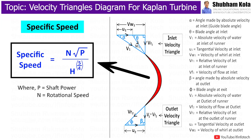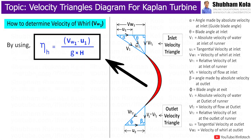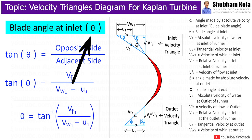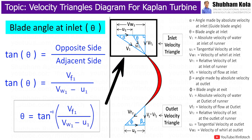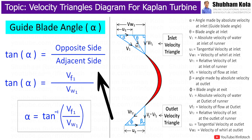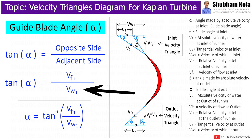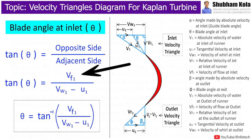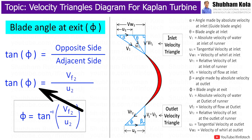The specific speed of Kaplan turbine is given by a formula where P is shaft power in kilowatt. The velocity of whirl Vw1 can be calculated from the equation of hydraulic efficiency. The guide blade angle alpha and blade angle theta are found from the inlet velocity triangle using tan α = Vf1 / Vw1, and tan θ = Vf1 / (Vw1 − U1). To calculate blade angle at exit φ, we use tan φ = opposite side / adjacent side. Using all these equations, we are able to solve problems on Kaplan turbine.